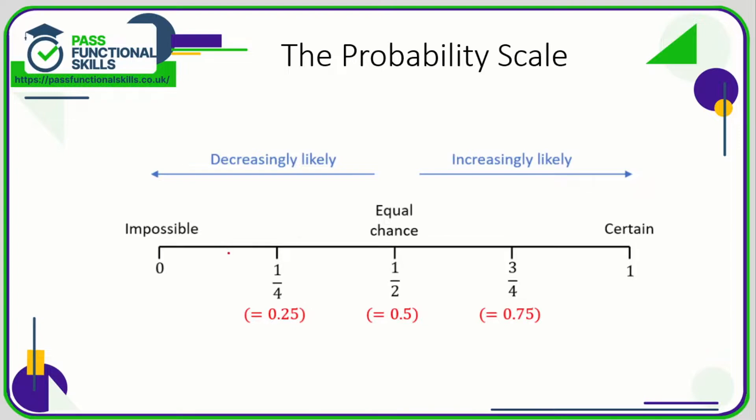We can express things on this scale. For example, if we said what is the probability that it rains on at least one day in December in the UK? Well, that is not 100% certain but it's pretty close to certain, so you could express that by putting an X on the line close to one. What's the probability of throwing heads on a coin? Well, that is an equal chance of heads or tails, so that would be this point here.